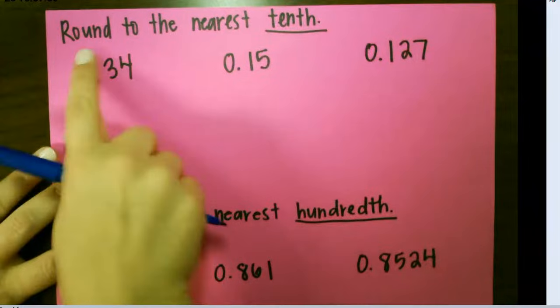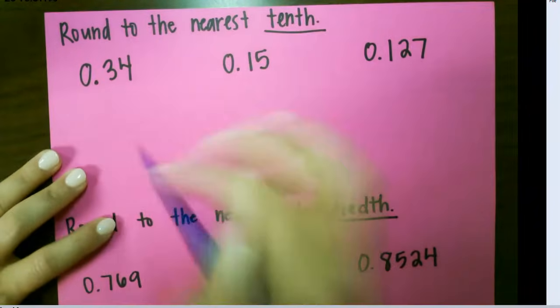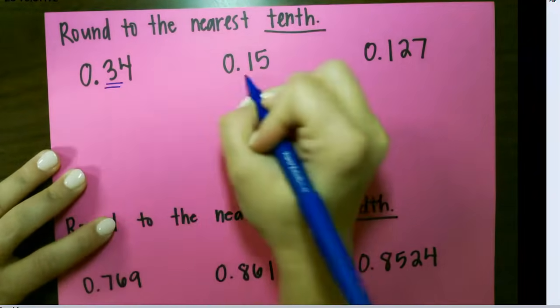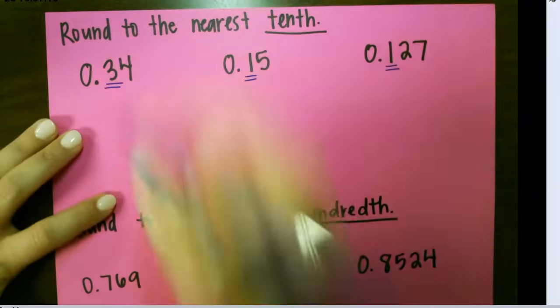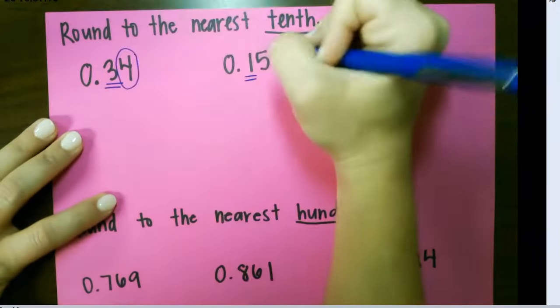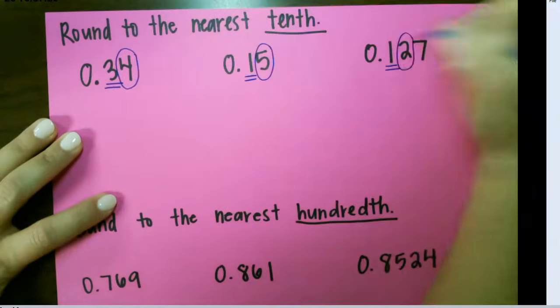So our first examples, if we want to round these to the tenths place, that's going to be the first number after the decimal. It is important to note that we need the number right after that as well.